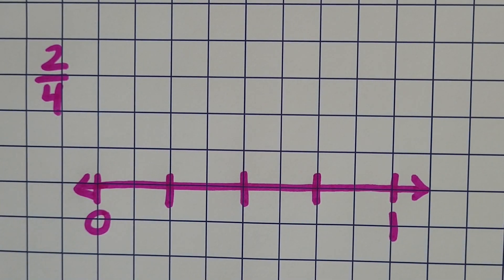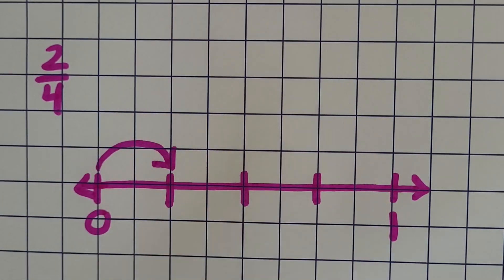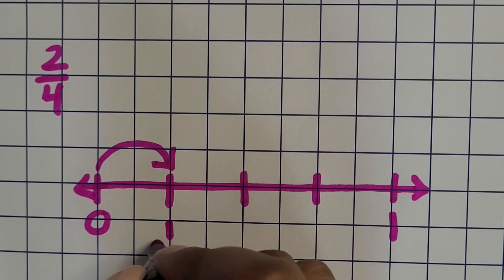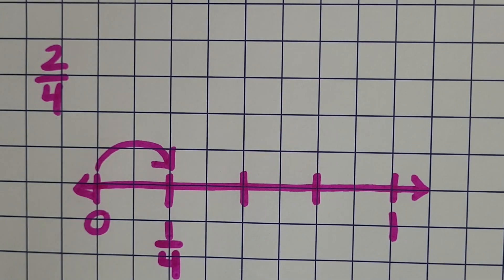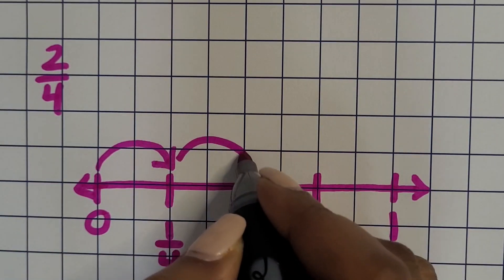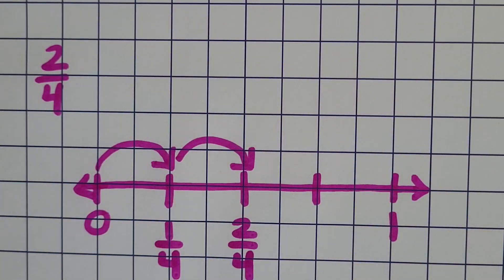Once you create your fourths, have your students label everything or just label it to the point to represent the fraction. Starting at zero, we're going to jump from zero to the first tick mark, that's one-fourth, and from one-fourth or from that first tick mark to the second tick mark is two-fourths. Make sure students can show you where two-fourths is on that number line.